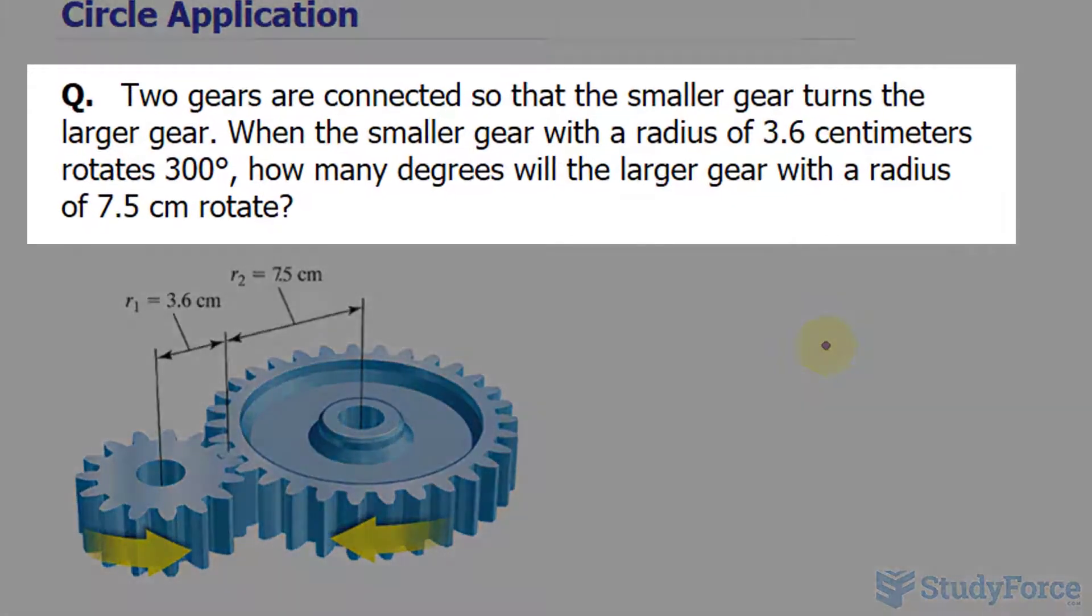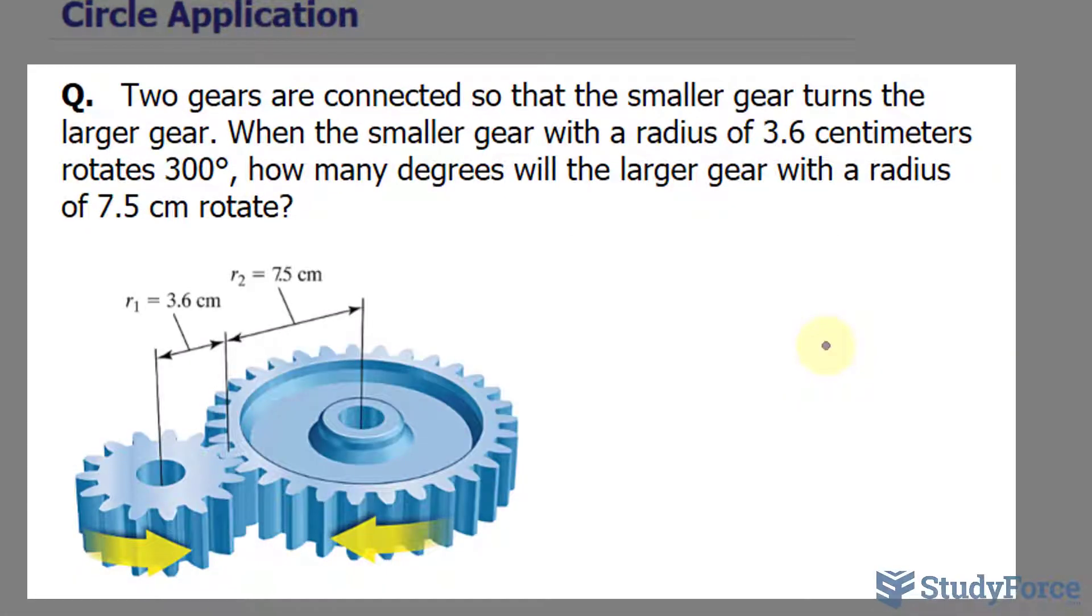The question reads: two gears are connected so that the smaller gear turns the larger gear. When the smaller gear with a radius of 3.6 centimeters rotates 300 degrees, how many degrees will the larger gear with a radius of 7.5 centimeters rotate?